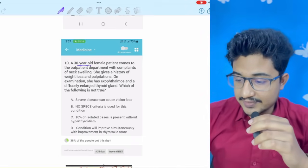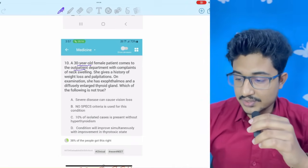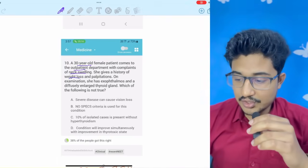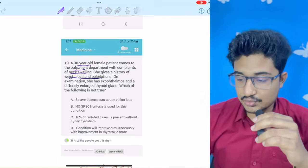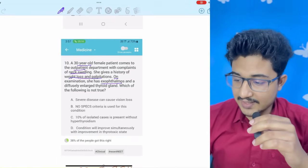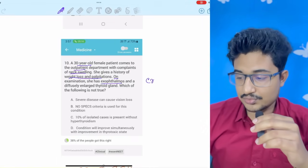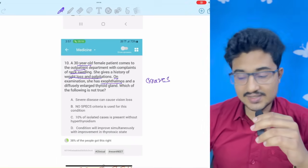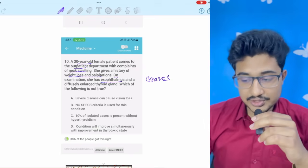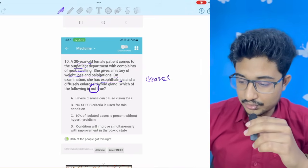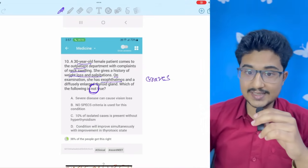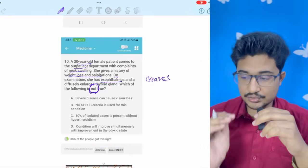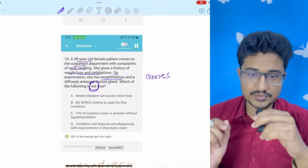Coming to the next question, a 30-year-old female comes to you in OPD with neck swelling. Okay, neck swelling. History of weight loss and palpitations going towards hyperthyroidism. On examination, she has exophthalmos. So, this is Graves. So, this is Graves' ophthalmopathy. Which of the following is not true? Okay, these are the keywords. Not is the keyword. While you are reading in time crunch phase also, you need to see the last line of the question. It is the most vital.